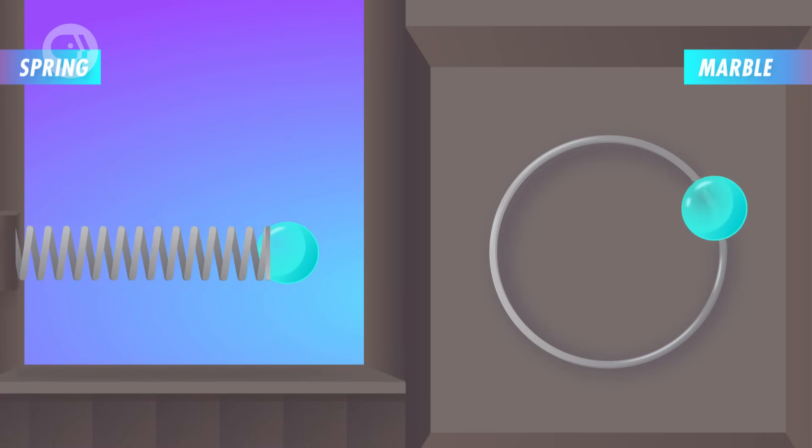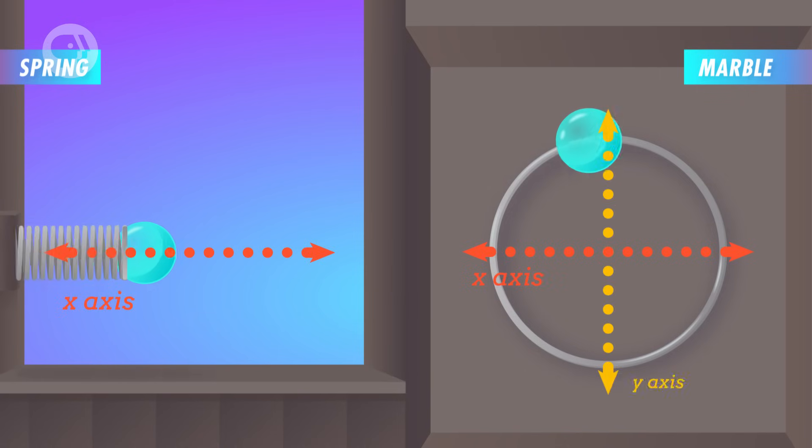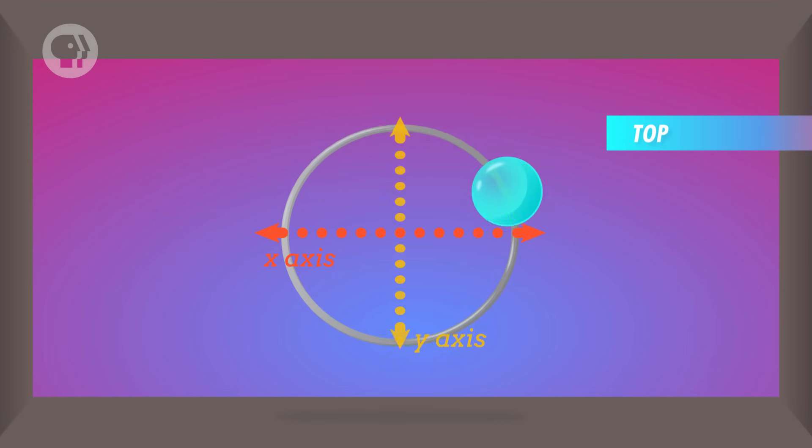You can see this for yourself if you compare the ball's motion on the spring to an object in uniform circular motion, say, a marble moving along a ring at a constant speed. Okay, I admit, it might seem like kind of a weird comparison at first. For one thing, the ball on the spring is moving in one dimension, while a marble moving along a circular path is in two dimensions. But what if you take that ring and look at it from the side? The marble keeps moving along its circular path, but to you, it looks like it's just moving back and forth along a straight line.